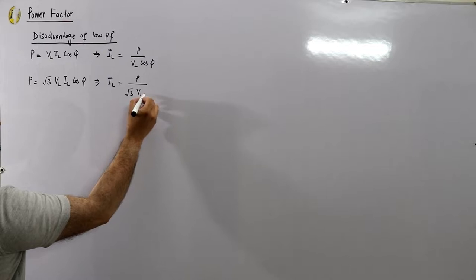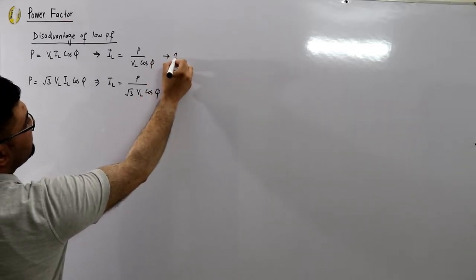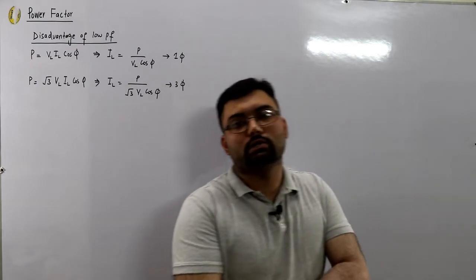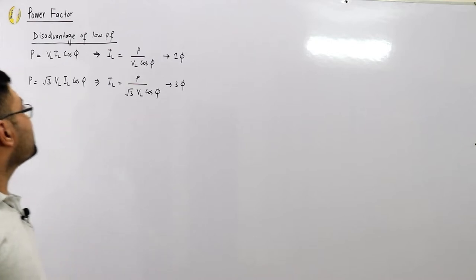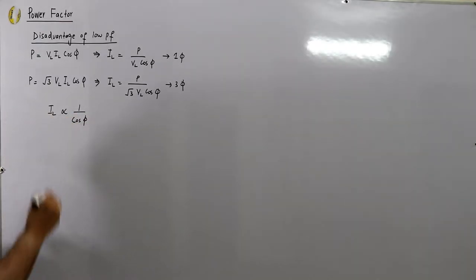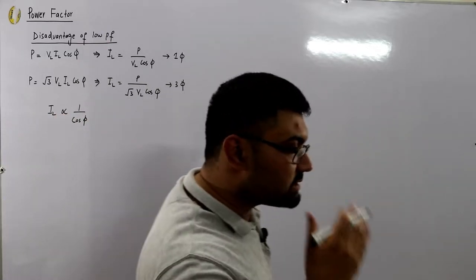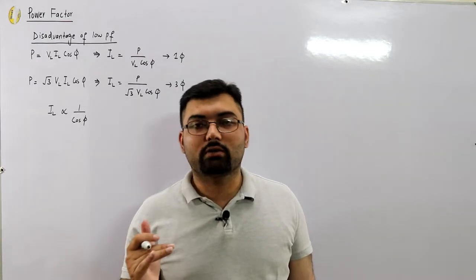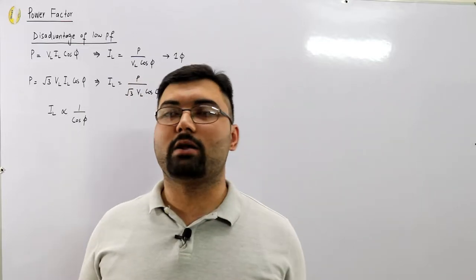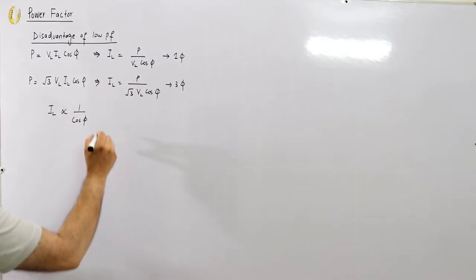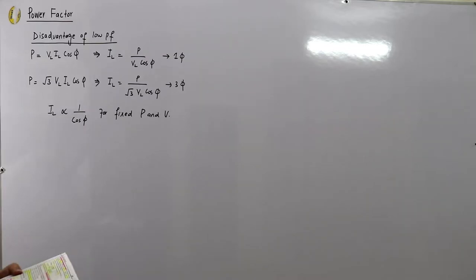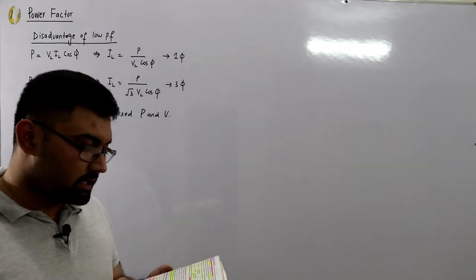In both single-phase and three-phase cases, the line current IL is inversely proportional to the power factor cosφ. For a fixed value of power and voltage, lower power factor means higher load current, and vice versa.